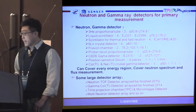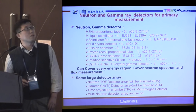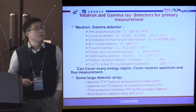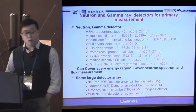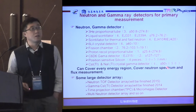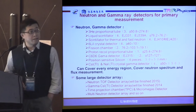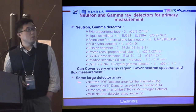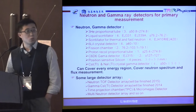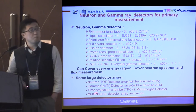Neutron and gamma detectors for primary measurement. We have such detectors, for example, helium-3 proportional tube and liquid scintillator. So they can cover the whole energy range and can be used for neutron spectra and flux measurement. At the same time, we also have a plan to build some larger detector systems. For example, neutron TOF detector, gamma detector, and time projection chamber.